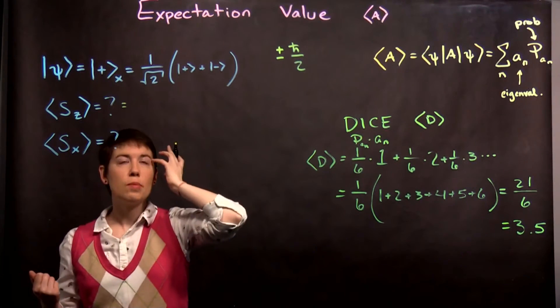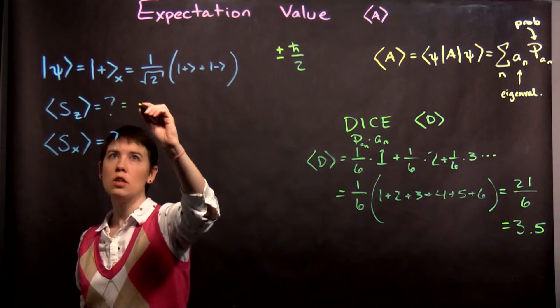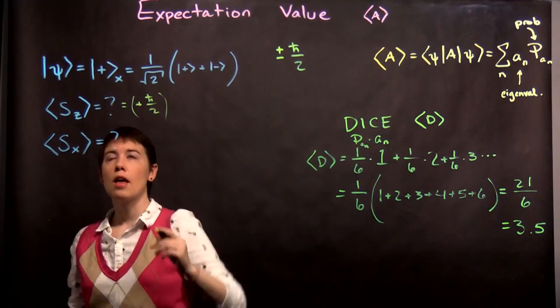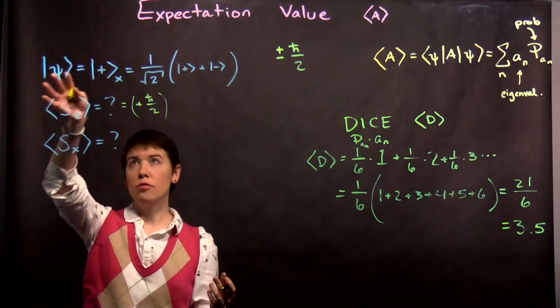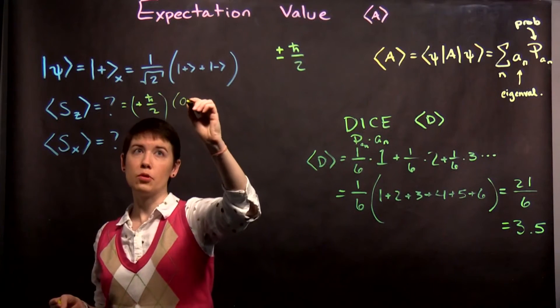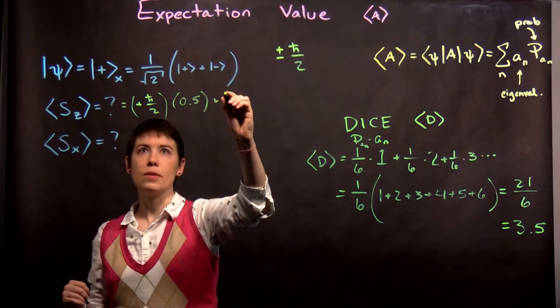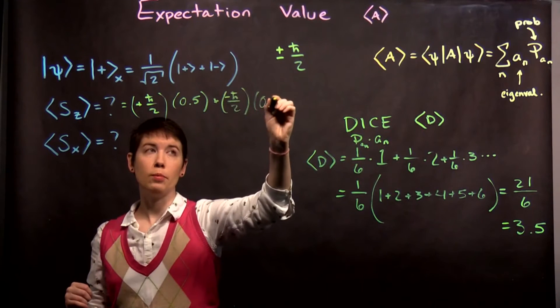Let's write it out first in terms of probabilities and our eigenvalues. What is the possible value? One eigenvalue for spin in the z direction is going to be plus h-bar over 2, spin up. And as you might know by now, the probability of that happening for a spin up particle is 50% or 0.5. And then our second possibility is that we measure negative h-bar over 2, again with a 50% probability.